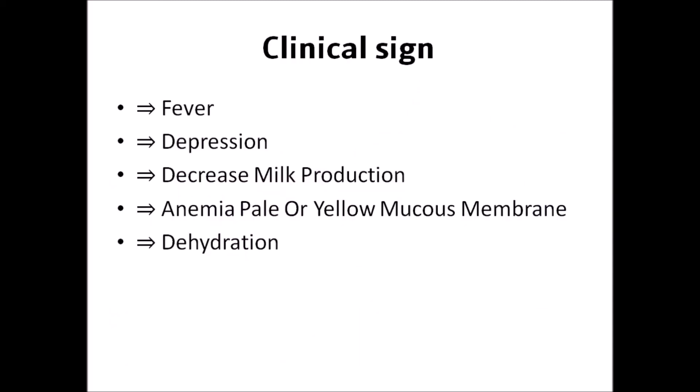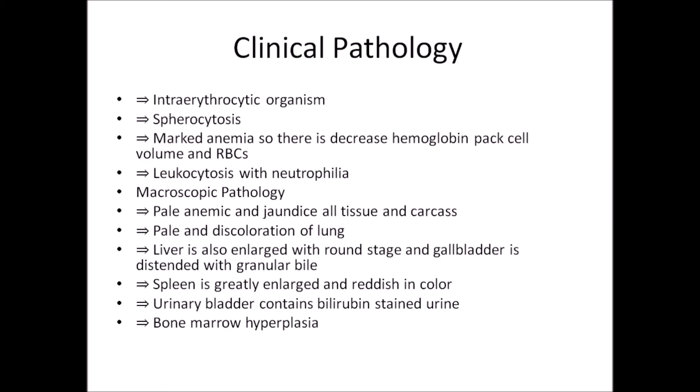The clinical signs of anaplasmosis include: fever, depression, decreased milk production, anemia with pale or yellow mucous membranes, and dehydration in the animal.